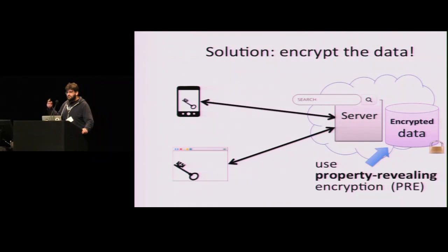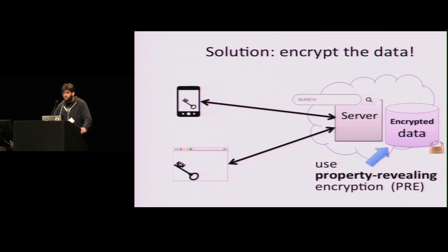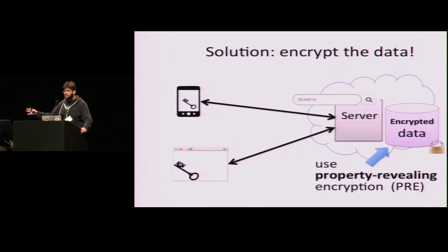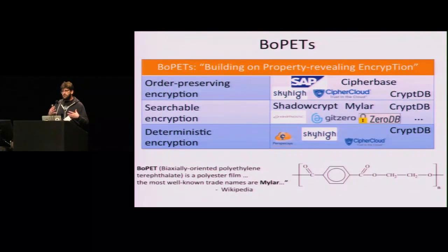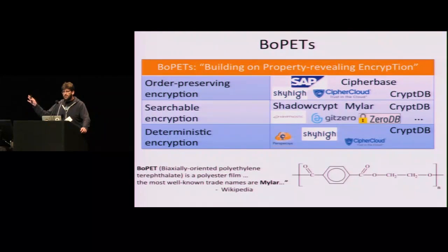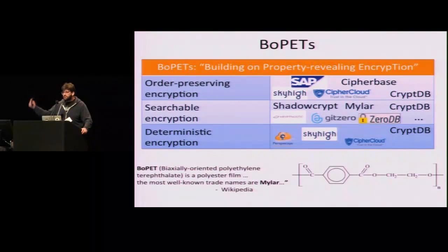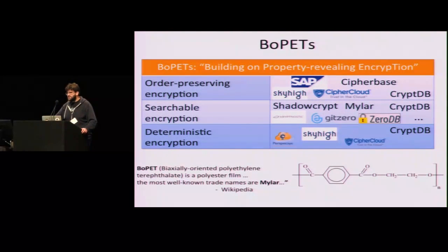One idea people have been playing with in the last 10 years or so is to strike a middle ground — a balance between these two extremes — using a primitive called property revealing encryption, which has been looked at by cryptographers in recent years. We reveal a property of the data that's not everything, but enough to enable specific functionality useful for our application, while still maintaining some kinds of provable confidentiality guarantees. Systems builders have started to notice this utility. In this work, we identified a class of systems that all roughly use property revealing encryption, and we came up with the acronym BOPETS — building on property revealing encryption — for these systems.